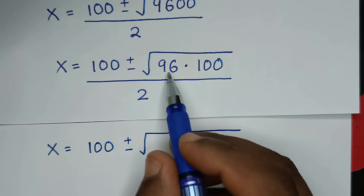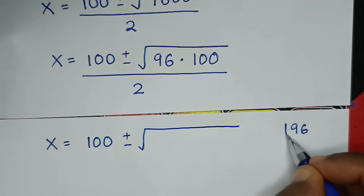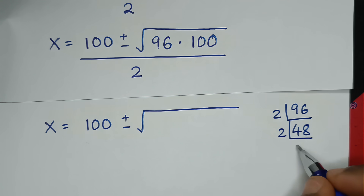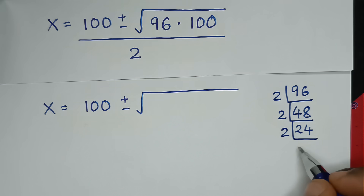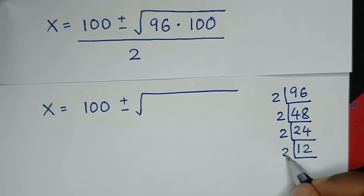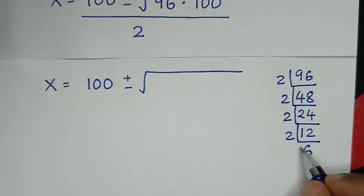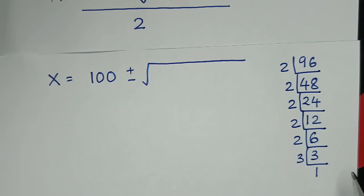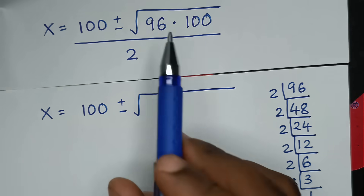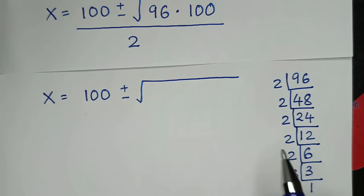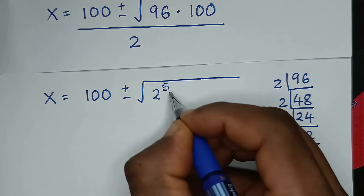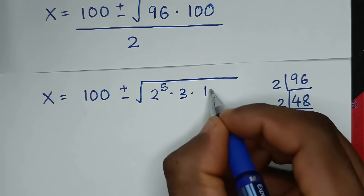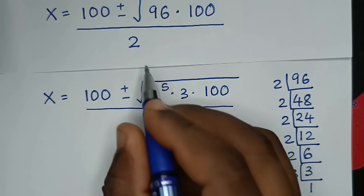From 96, let's find the prime factors. 96 is divisible by 2 to give 48, divide by 2 gives 24, divide by 2 gives 12, divide by 2 gives 6, divide by 2 gives 3, divide by 3 gives 1. So 96 has five 2's, meaning 96 equals 2 to the power 5 times 3.